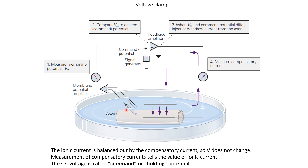We put a recording electrode inside the axon and there is a reference electrode outside. This recording electrode can tell us what is the voltage of the neuron relative to outside, and this difference can be fed to an amplifier to stabilize the recording. For now let us assume there is no amplification happening here, so we are measuring the actual voltage of the neuron. This voltage is fed to the negative terminal of a feedback amplifier, which is very important for voltage clamp and has a very large amplification factor.